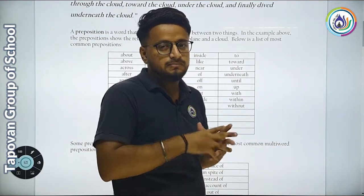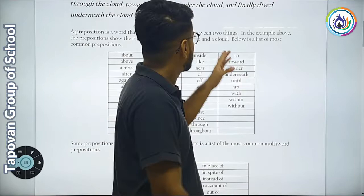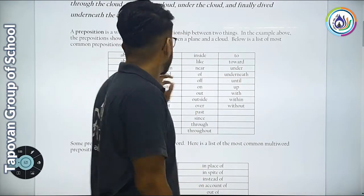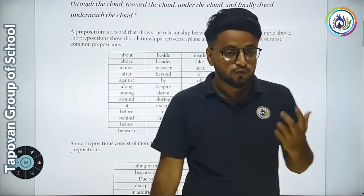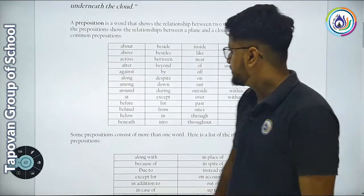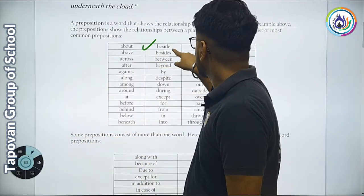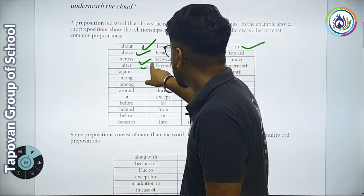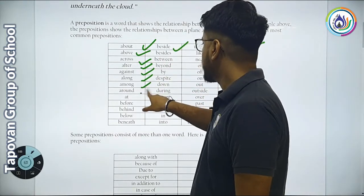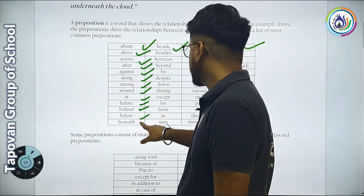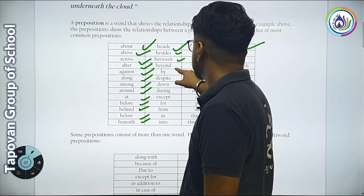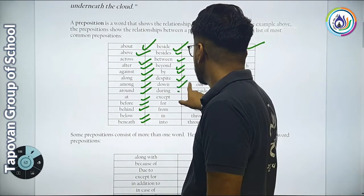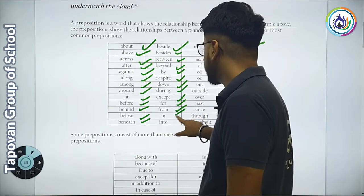Here is a list of the most common prepositions: about, beside, inside, to, above, across, after, against, along, among, around, at, before, behind, below, beneath, besides, between, beyond, by, despite, down, during, except, for, from, in, into.